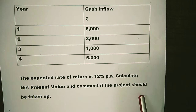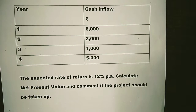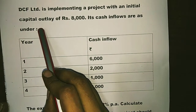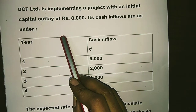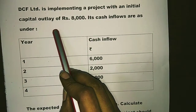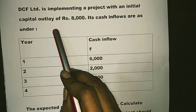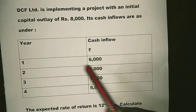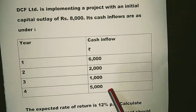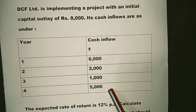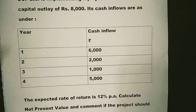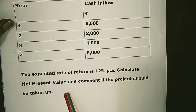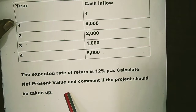We need to calculate the net present value and comment on whether the project should be taken up. DCF Limited wants to take one project with an initial investment of rupees 8000. With this investment they earn cash inflows over four years, so this project has a life of four years. The expected rate of return is 12 percent per annum.